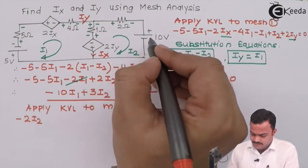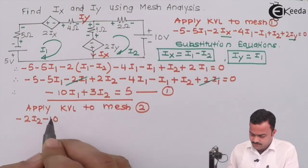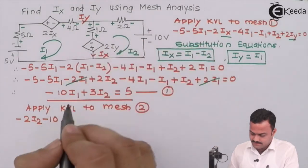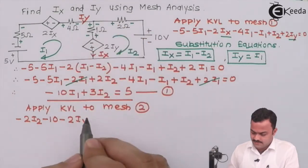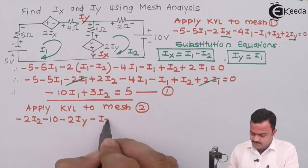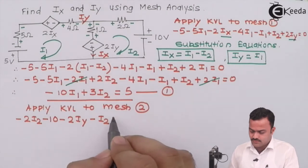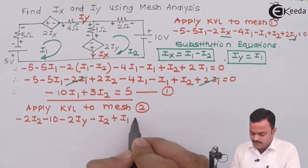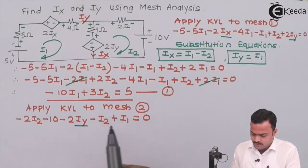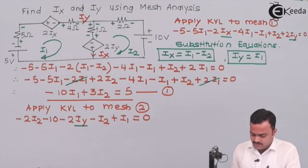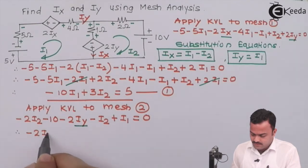After substituting and simplifying the mesh two equation, the i2 terms cancel, the i1 terms cancel, and the i3 terms cancel, giving us minus 2*i2 equals 0. Therefore mesh current i2 equals 0.